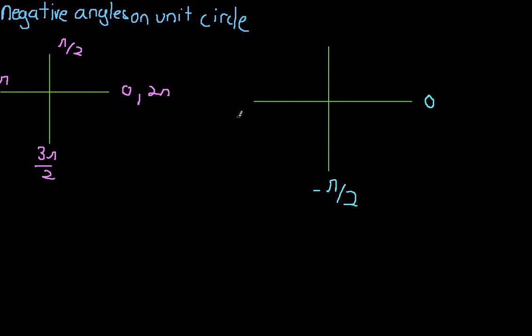So down here would be negative π/2. This would be negative π. This would be negative 3π/2, and this would be negative 2π.